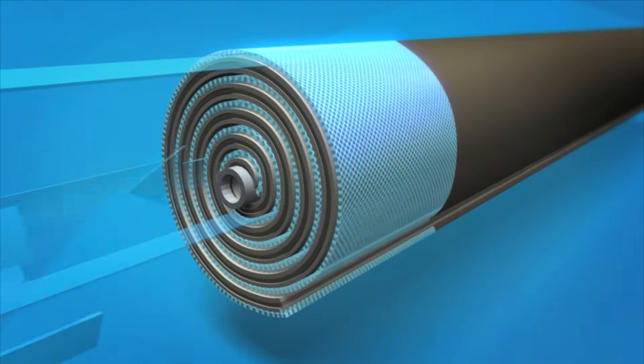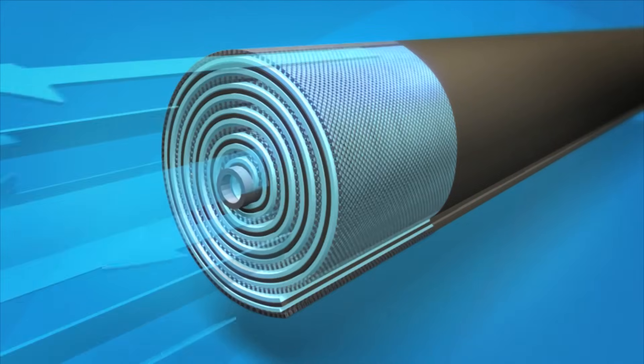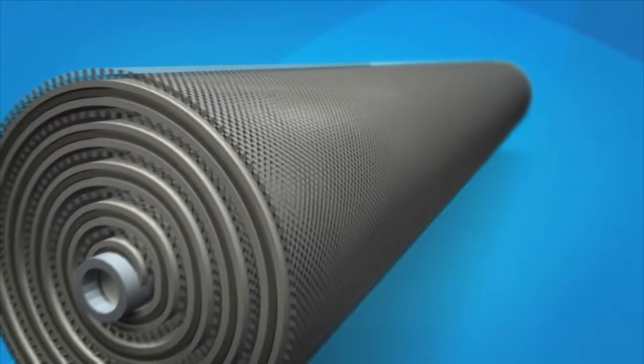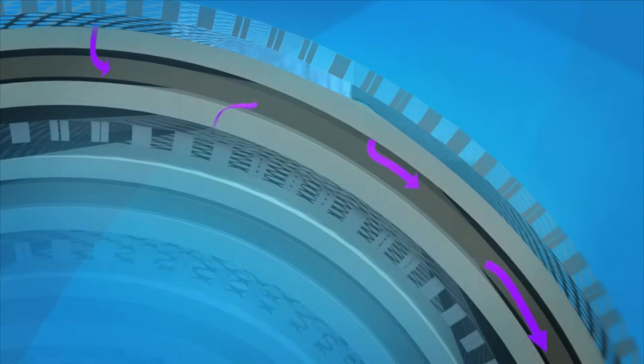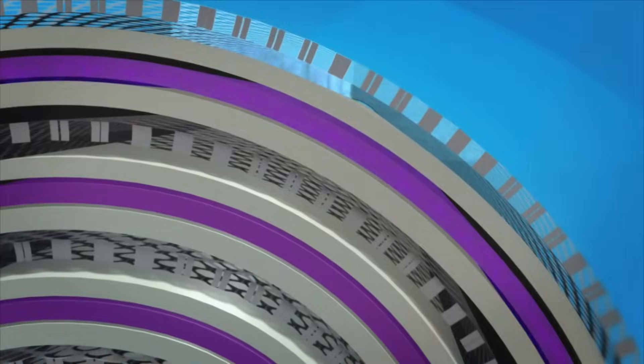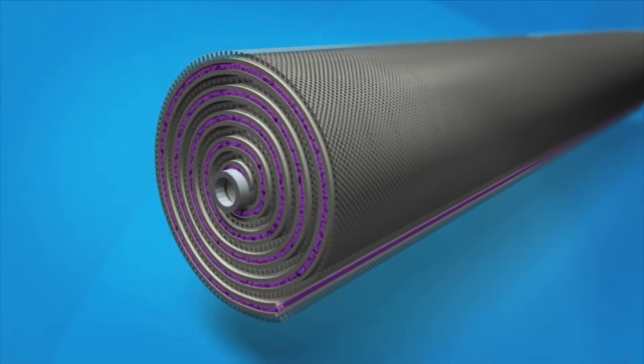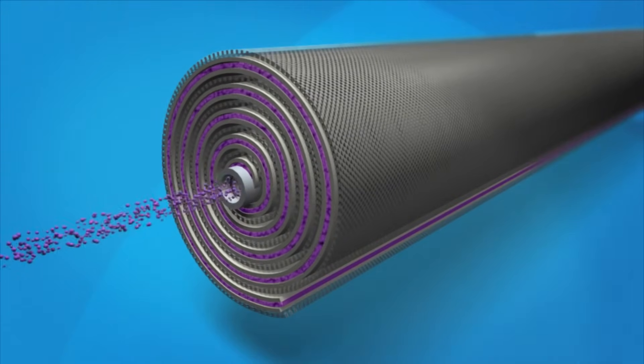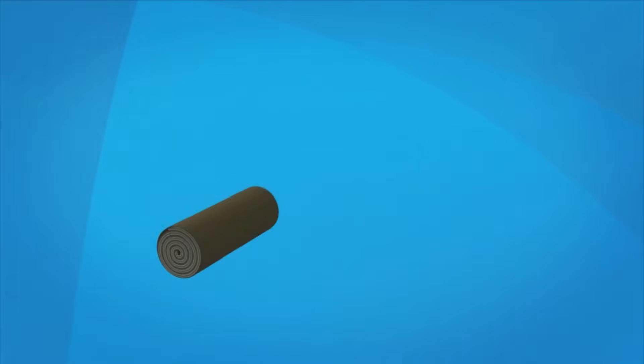Feed water is forced through the feed channel spacer and into the barrier layer of the membrane. Water passes through the membrane surface into the permeate channel. It flows in a spiral direction and collects in the core tube. This water is the final recycled water product, or permeate.